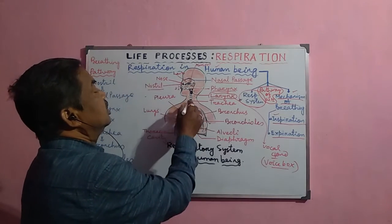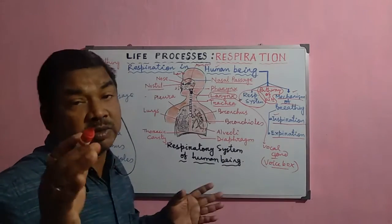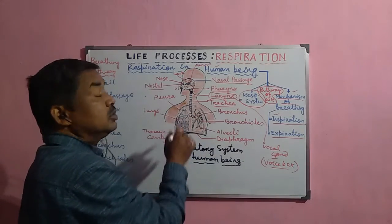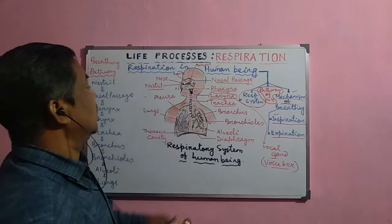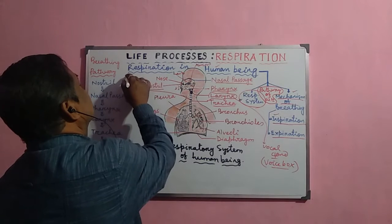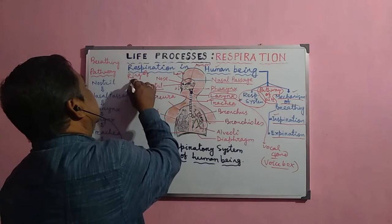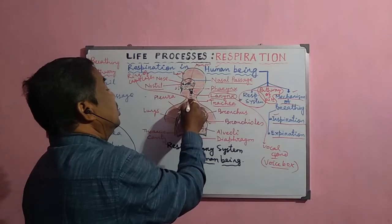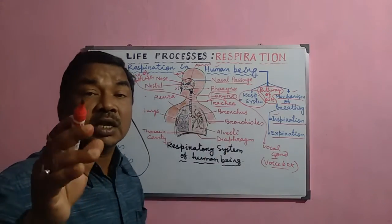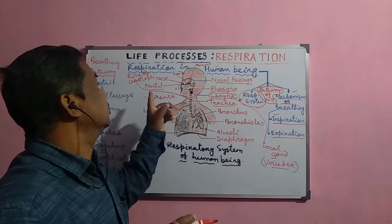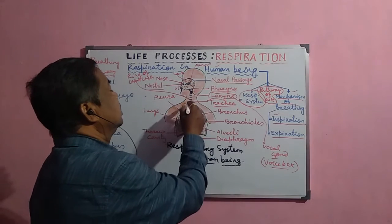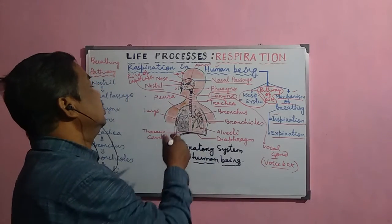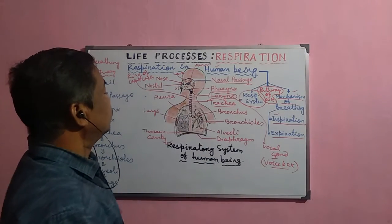The next important part is the trachea, also called the windpipe, through which air passes into the thoracic cavity. The windpipe is always open because it has rings of cartilage — cartilaginous rings that do not allow the trachea to collapse. The trachea never collapses due to these cartilaginous rings, which are semi-circular on the external side and attached to the oesophagus on the inner side.